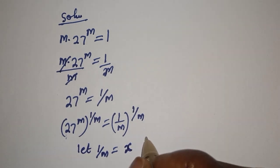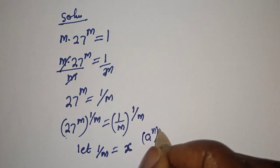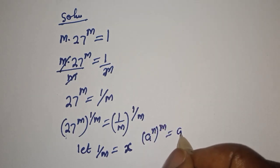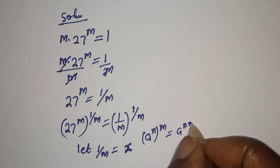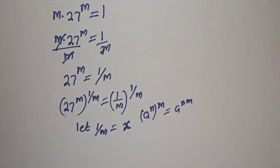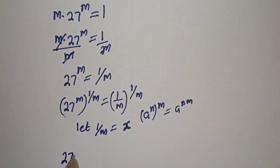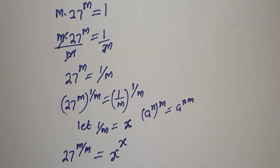Using the rule that a raised to power n, to the power of m, equals a raised to power m·n, we get 27 raised to power m over m, which simplifies to 27 equals s raised to power s.